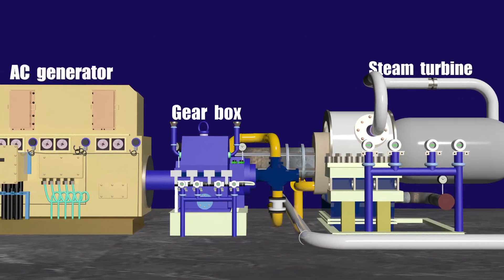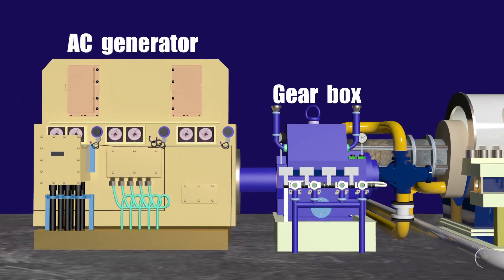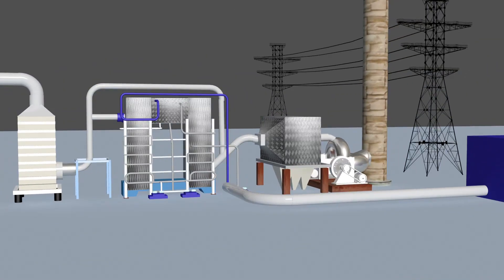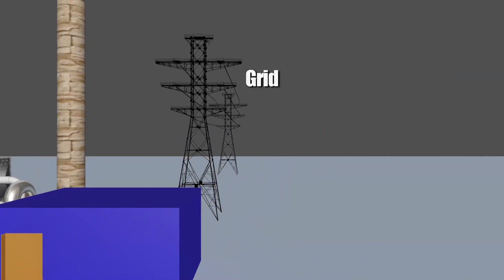The turbine has a gear unit capable of continuously transmitting the necessary power and is designed for speed reduction ratios for the turbine. The unit may consume the power partly and evacuate the rest into the state grid.